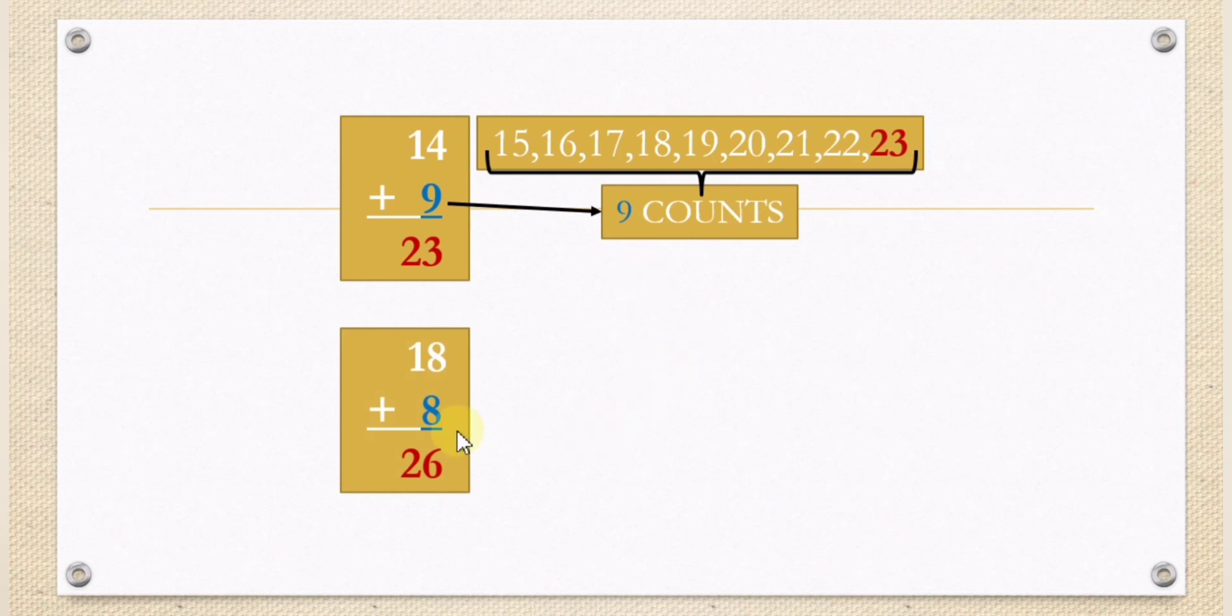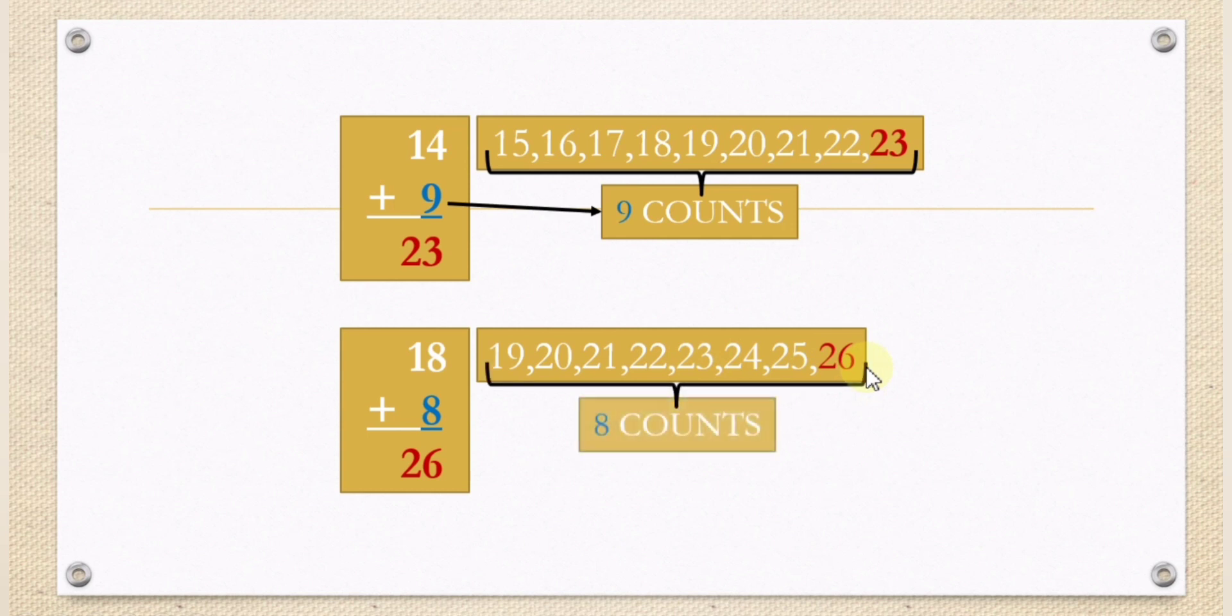Another: we have 8 plus 18. The result is 26. How did we arrive at the answer of 26? We will count 8 counts after 18. Start with 19, 20, 21, 22, 23, 24, 25, and 26. 26 is in the 8 counts.